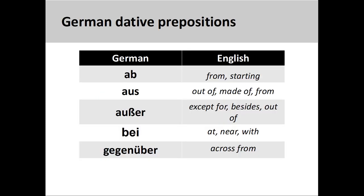The dative prepositions we will discuss in this video include: 'Ab,' meaning 'from a certain point in time,' 'from a certain place,' or 'starting on'; 'Aus,' meaning 'coming out of,' 'made of,' or 'from'; 'Außer,' meaning 'besides,' 'with the exception of,' or 'out of'; 'Bei,' meaning 'at,' 'near,' or 'with'; and 'Gegenüber,' meaning 'across from.'